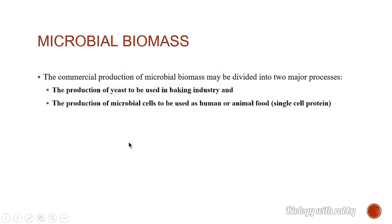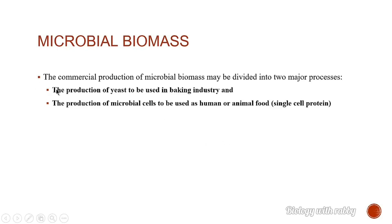Number one is microbial cells, or microbial biomass. The commercial production of microbial biomass may be divided into two major processes: the production of yeast to be used in the baking industry, and the production of microbial cells to be used as human or animal food.